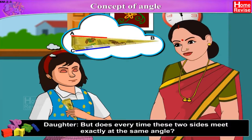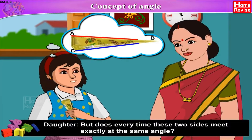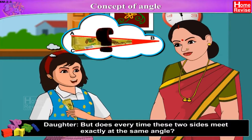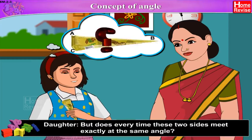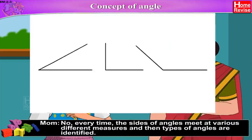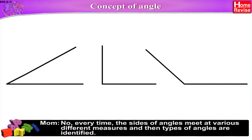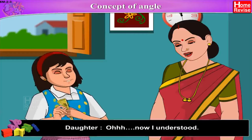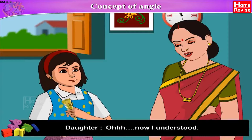But does every time these two sides meet exactly at the same angle? No, every time the sides of angles meet at various different measures, and then the type of angle is identified. Oh, now I understood.